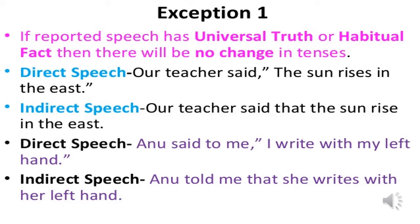If the reported speech has a universal truth or habitual fact, then there will be no change in tenses. For example: 'Our teacher said the sun rises in the east' remains as 'Our teacher said that the sun rises in the east.' Next: 'Anu said to me I write with my left hand' — this is a habitual fact. 'Said to' will be changed into 'told.' Anu told me that she writes with her left hand.